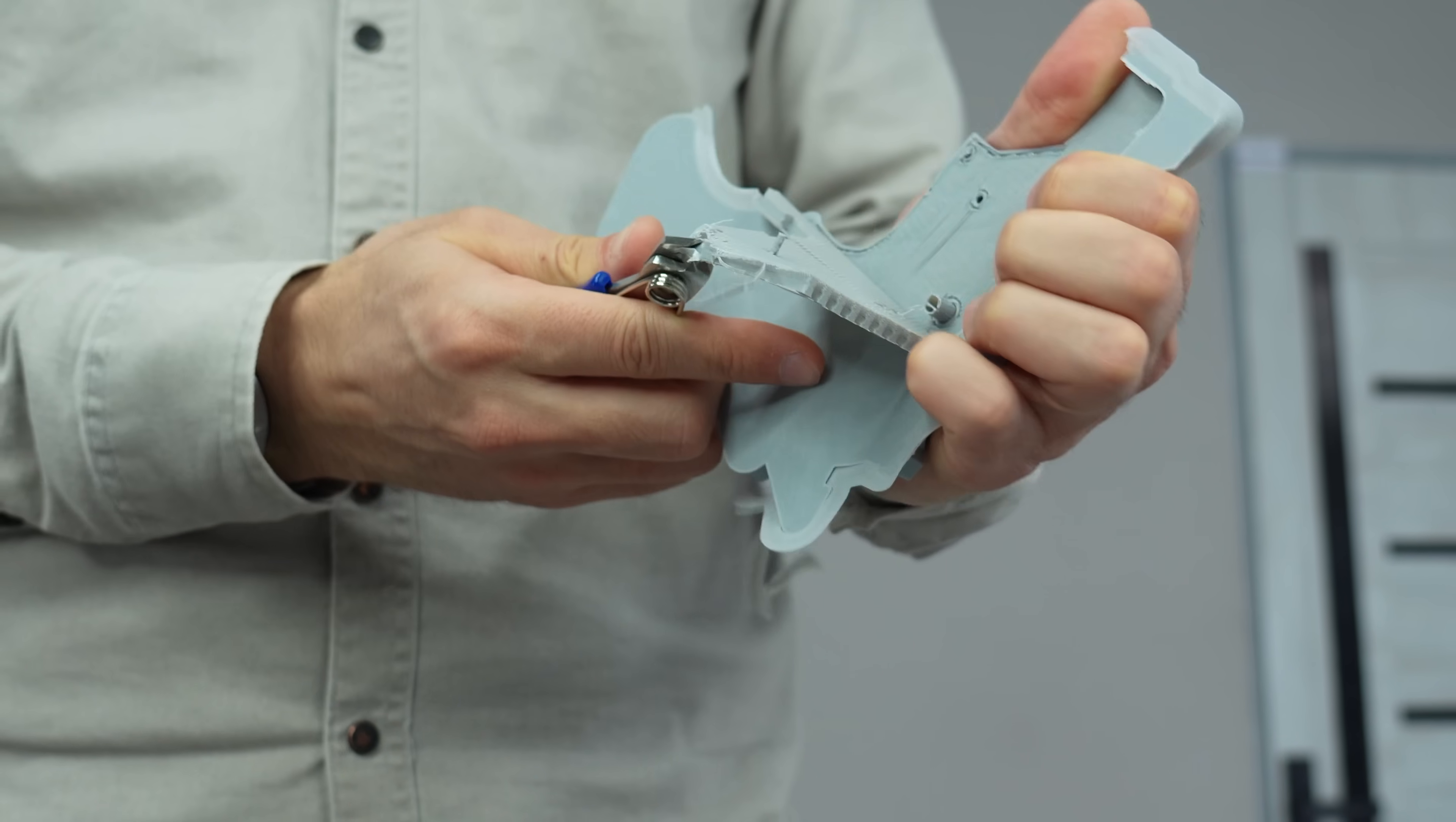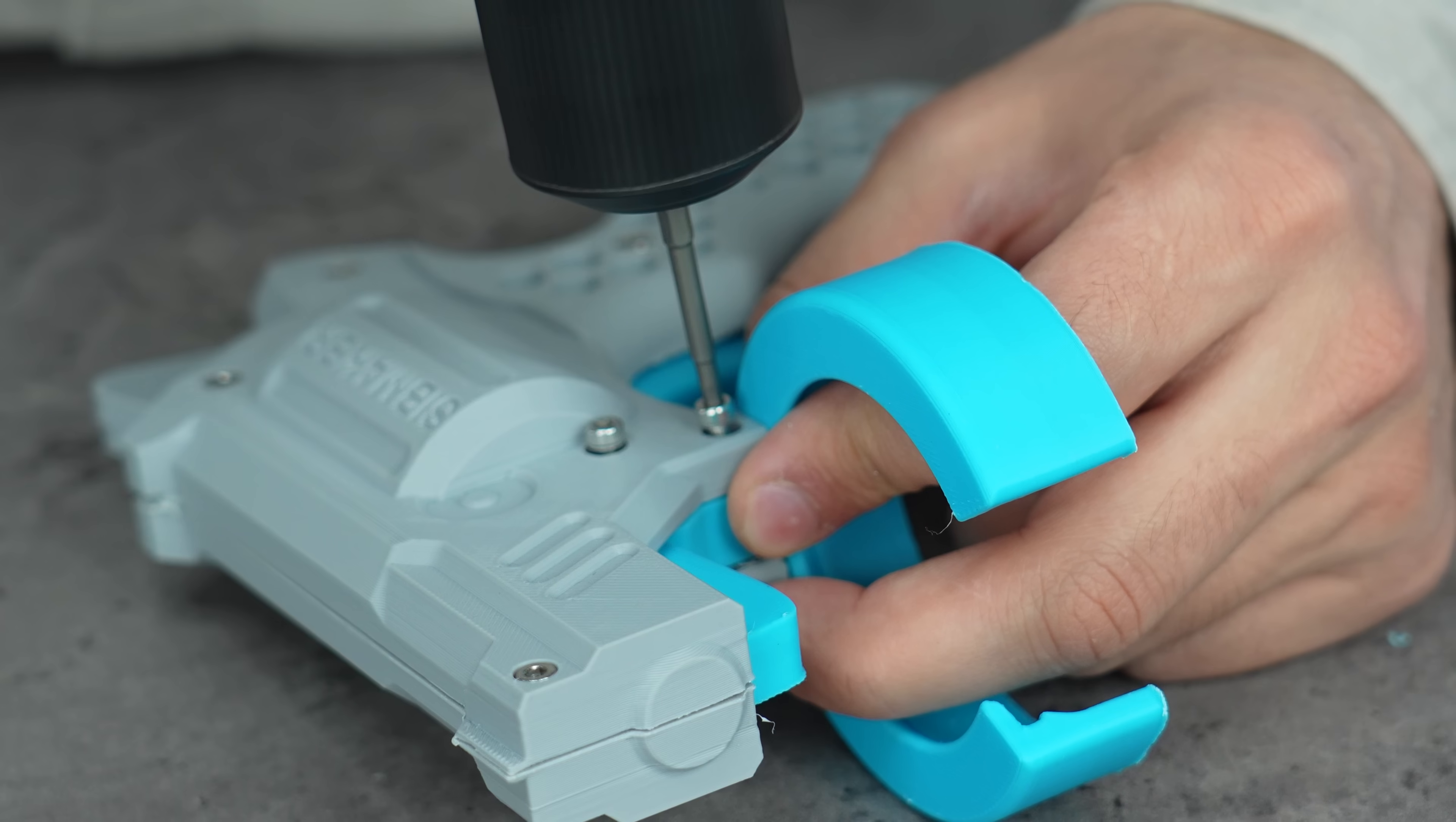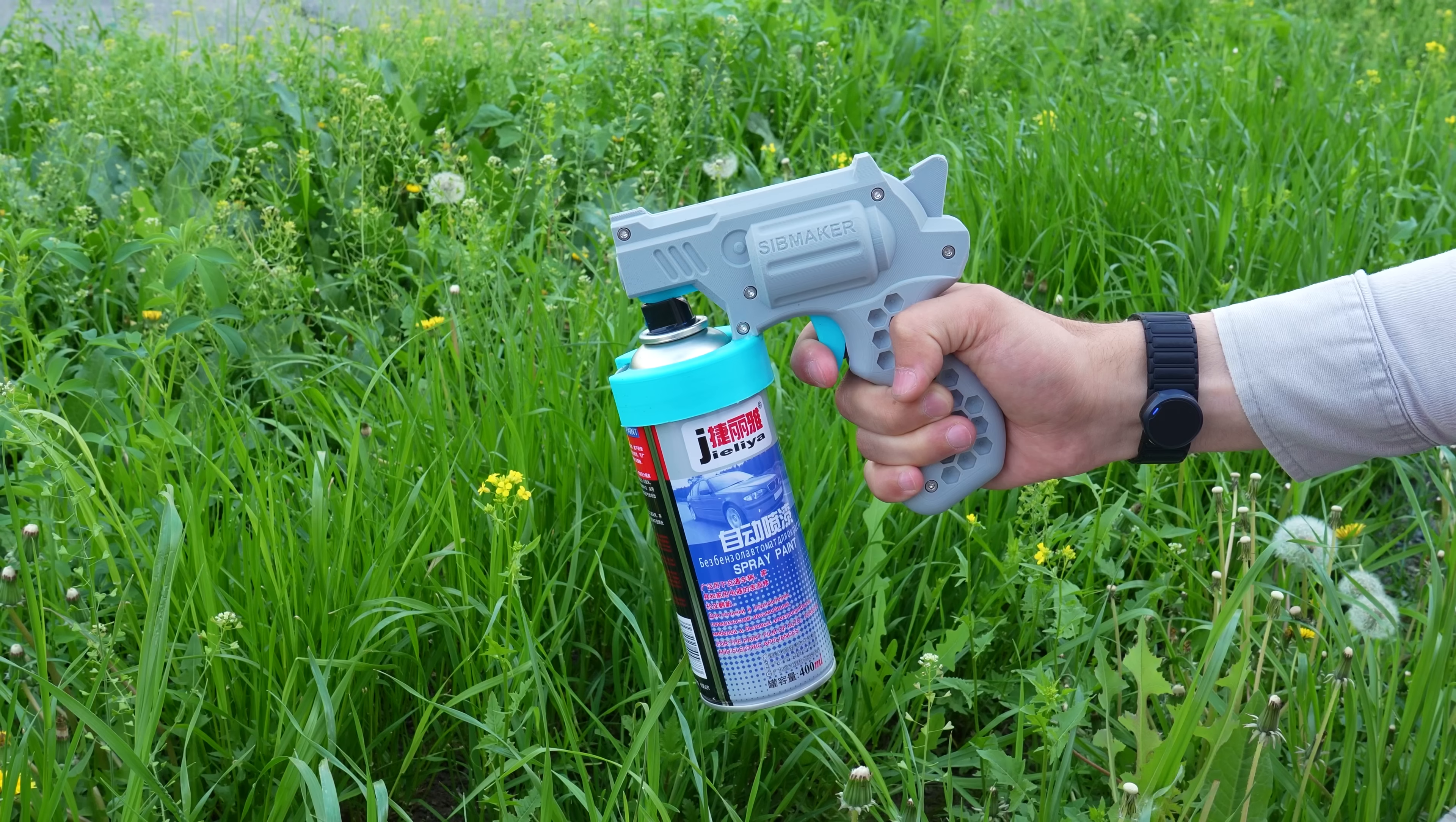Dreams come true. After the print job, assembly is pretty simple. Just put a trigger, tighten some bolts, and insert the can holder and tighten other bolts again. That's it, snap on your spray can and you're ready to go with this simple print model.